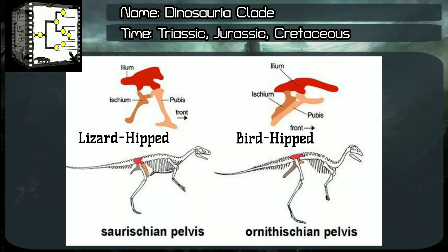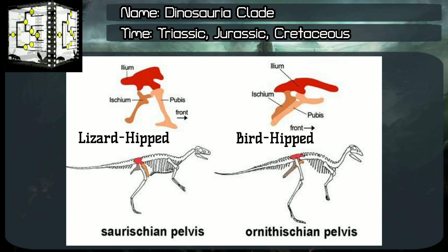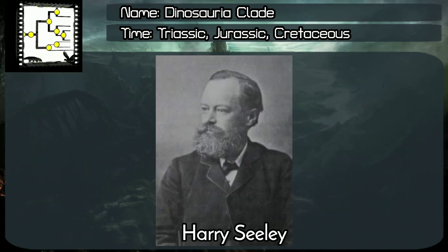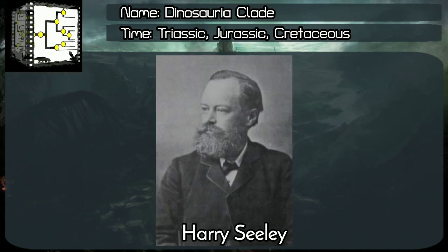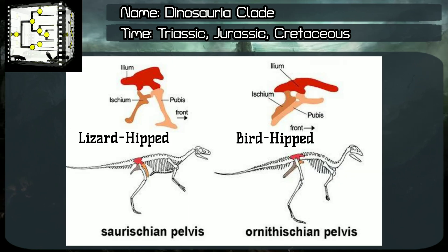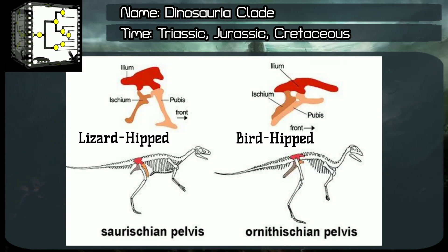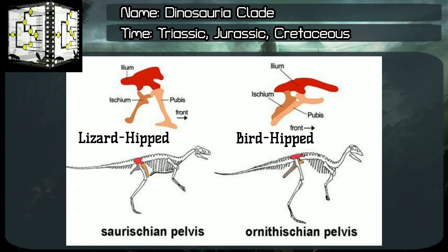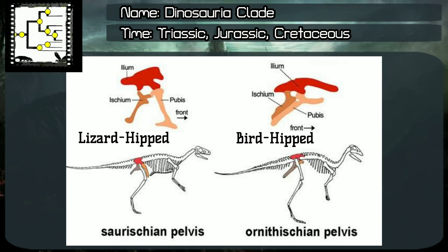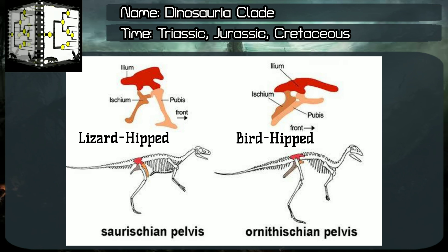Ornithischia order and Saurischian clade differentiation, classified by Harry Seeley, years 1887 and 1888. From Greek, Saurischian means lizard-hipped, and Ornithischia means bird-hipped. The main difference between the two orders is the pelvis structure.